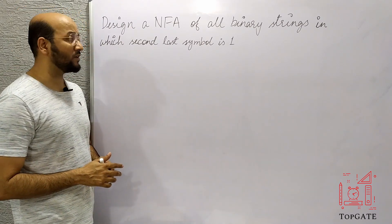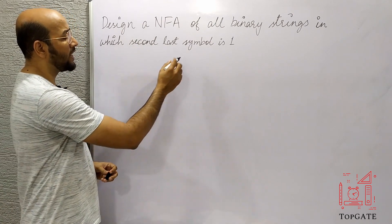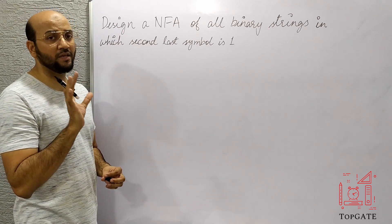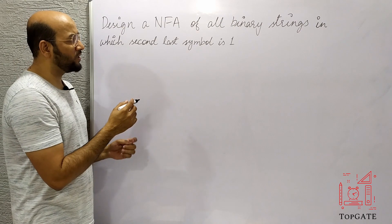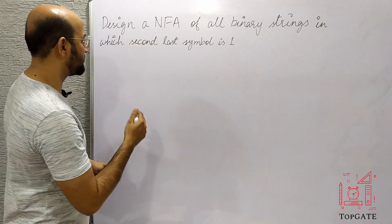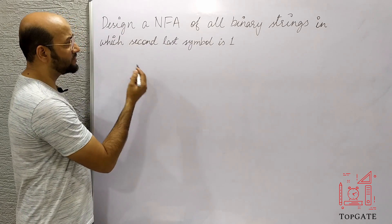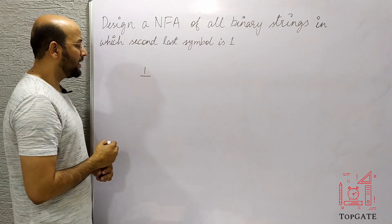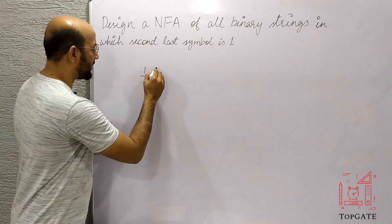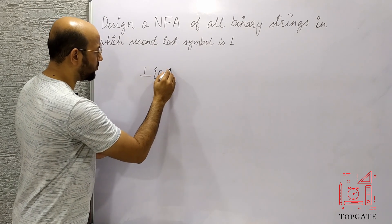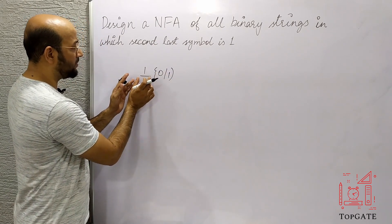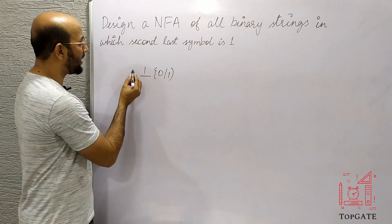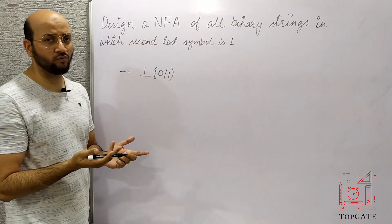Let's first understand what kind of language this is. We need only those strings in which the second last symbol is 1. It's better if we design a regular expression for this. The second last symbol is 1, and after this 1 we can have either 0 or 1 — but only one character after the second last symbol. Before this 1, we can have any combination of 0s and 1s.